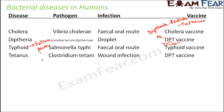Tetanus is also called lock jaw because the jaws get kind of locked and proper jaw movement is not possible. The infection spreads through wounds — whenever you get hurt with an old rusted metal object, doctors advise a tetanus injection. That injection is the DPT vaccine — Diphtheria, Pertussis, Tetanus — which prevents the disease from occurring.